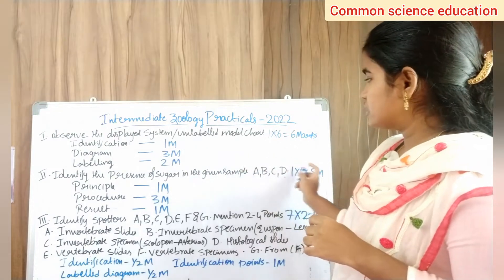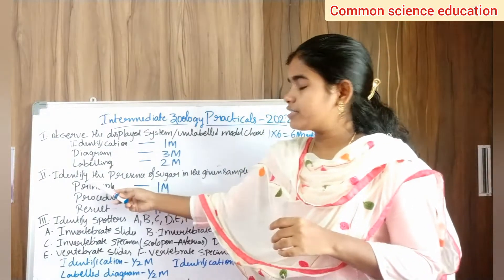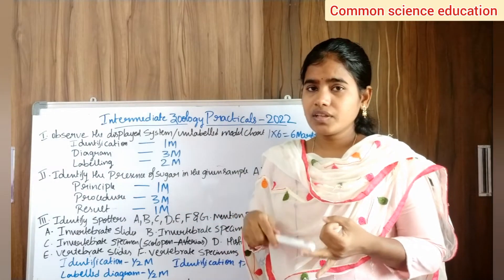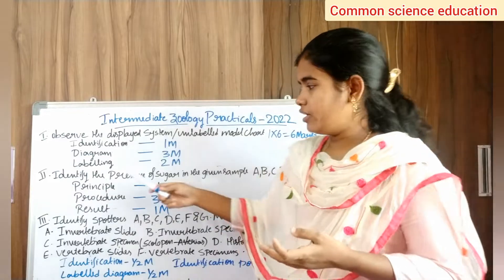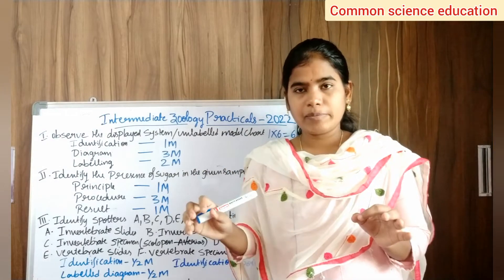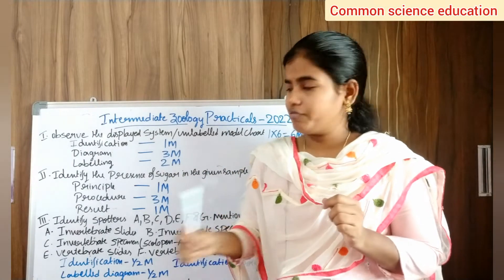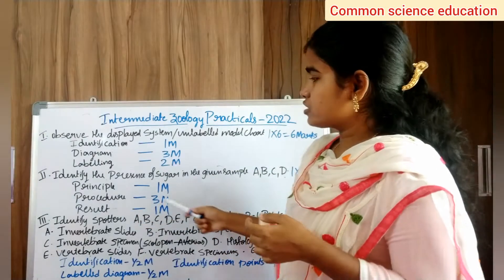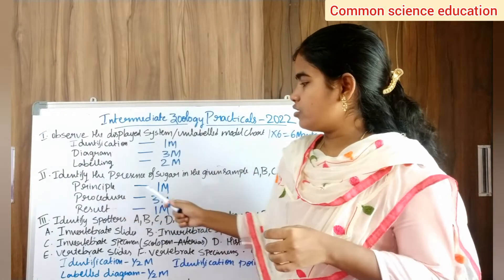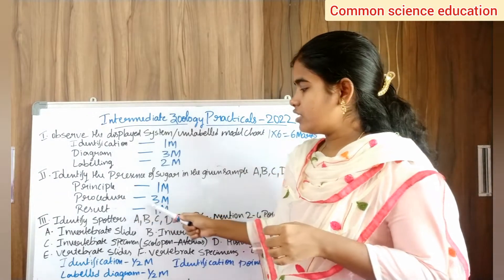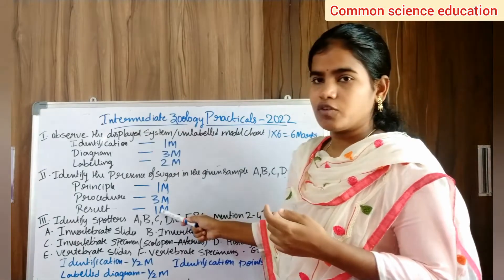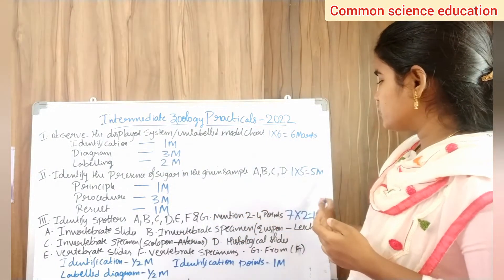So in total, Roman number 1 carries 6 marks in practicals. Roman number 2 is to identify the presence of sugar in the given sample — sugar, urine, and lipids. We have solutions A, B, C to identify. For the written part in Roman number 2, the principle is 1 mark, procedure is 3 marks, and result is 1 mark. So in total, we have 5 marks.